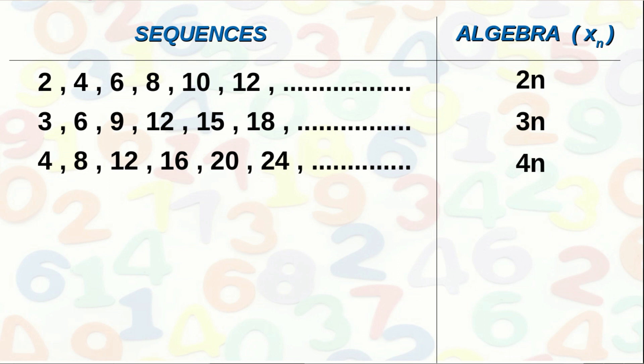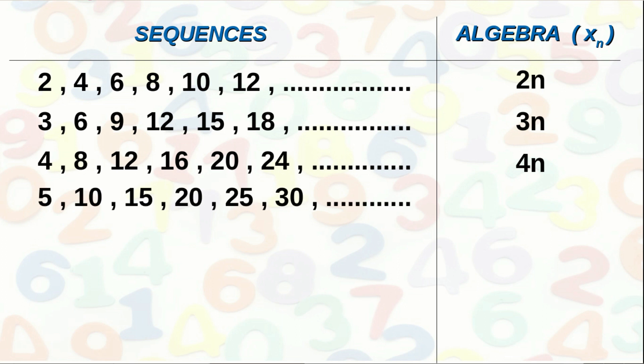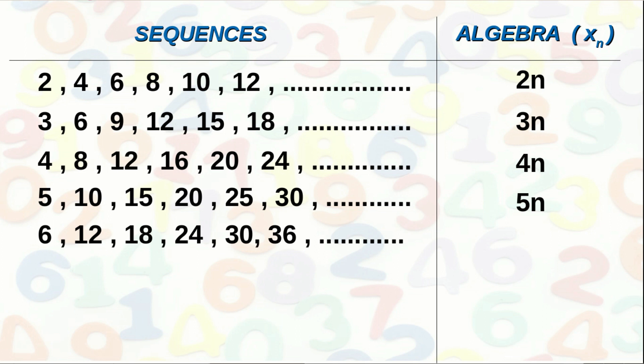The sequence of multiples of 5: 5, 10, 15, 20, 25, 30, etc. The terms are got by multiplying the positions by 5, so the nth term is 5n. For the sequence of multiples of 6: 6, 12, 18, 24, etc. — starts with 6 and 6 is added repeatedly — the terms are got by multiplying positions by 6, so the nth term is 6n.